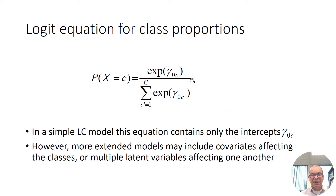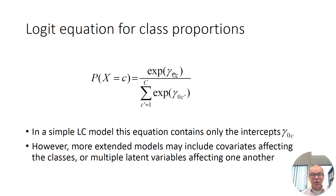The class proportions are also typically parameterized in terms of logit equations. The probability of being in a latent class is modeled as a function of the gamma parameters, which here are intercept terms only. The gamma parameters are unbounded, and this transformation of the gamma parameters — exponentiating each gamma, summing over all latent classes using C prime, and dividing — yields the class proportions.